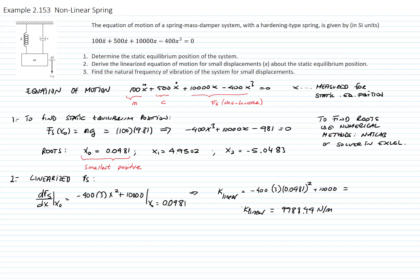Now that we have the linear version of the constant of the spring for a specific point, then we can write a new linear equation of motion that will be valid for small displacements around that equilibrium position. 100 times the acceleration, which is x double dot, plus 500 times the velocity, which is x dot, plus the constant of the spring 9988.44 times x equals zero. So this is x measured about that equilibrium position.